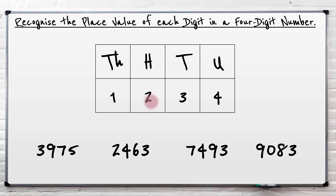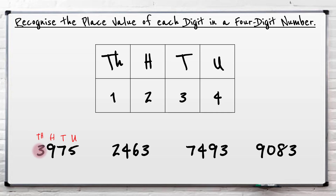So we say this number: one thousand two hundred and thirty four. Again, you've got to be able to recognise what the value of each digit is. Well this one's got five units, seven tens, nine hundreds and three thousands. Beside the units always the tens — six tens, four hundreds beside the tens always, and then two thousands.